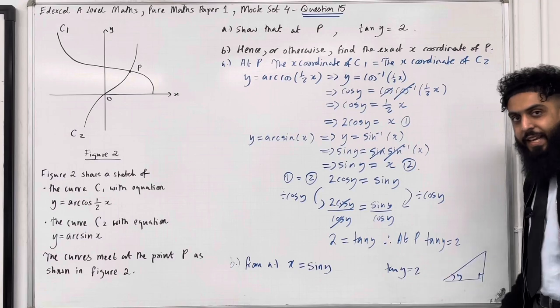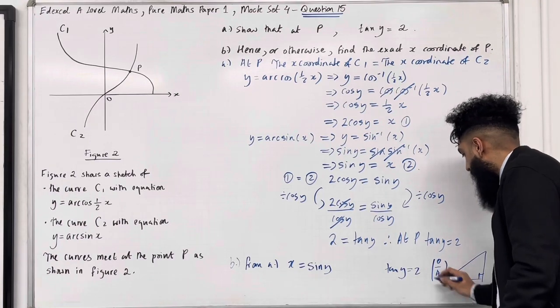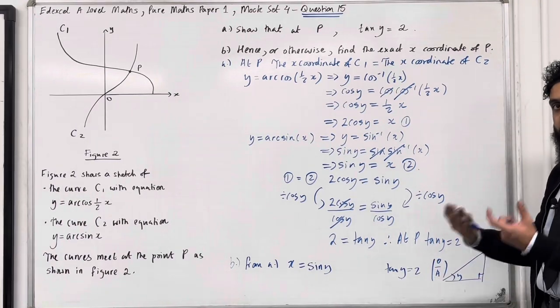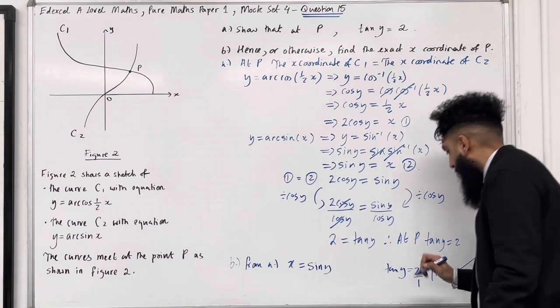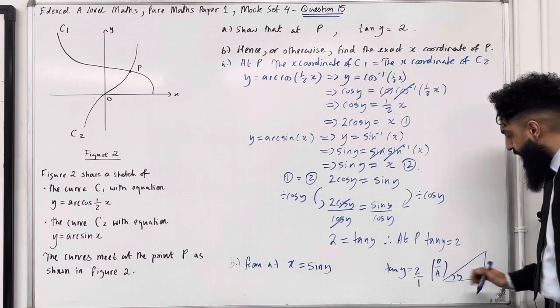So we know that tan is given by opposite over adjacent. So we can rewrite the 2 as 2 over 1. So if we compare, we see that the opposite is 2, and we can see that the adjacent is 1.